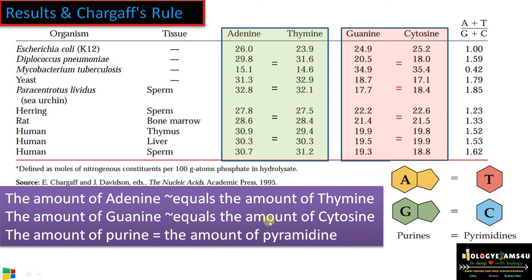So he confirmed that the amount of guanine is also approximately equal to cytosine. This is the first part of Chargaff's rule: the amount of adenine is approximately equal to the amount of thymine, whereas the amount of guanine is equal to the amount of cytosine. In other words, the amount of purines (adenine and guanine) is equal to the amount of pyrimidines (thymine and cytosine).